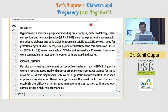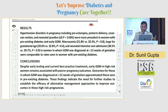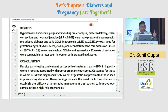The conclusion was: despite early testing and current best-practice treatment, early GDM in high-risk women remains associated with poor pregnancy outcome. Outcomes for those in whom GDM was diagnosed at less than 12 weeks of gestation approximated those seen in pre-existing diabetes. So if diagnosed before 12 weeks, the neonatal outcome and insulin requirement seems almost similar to pre-existing diabetes.